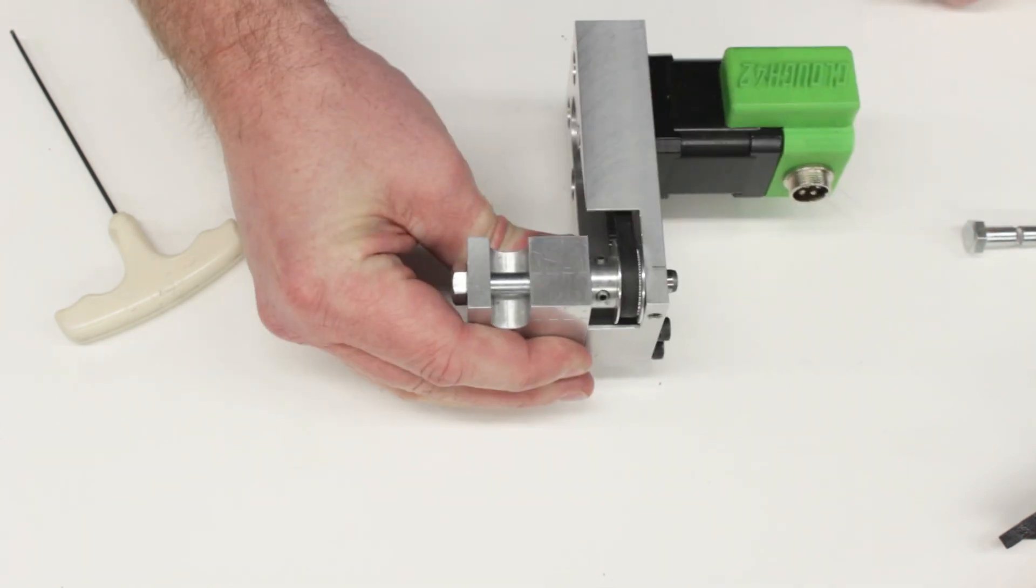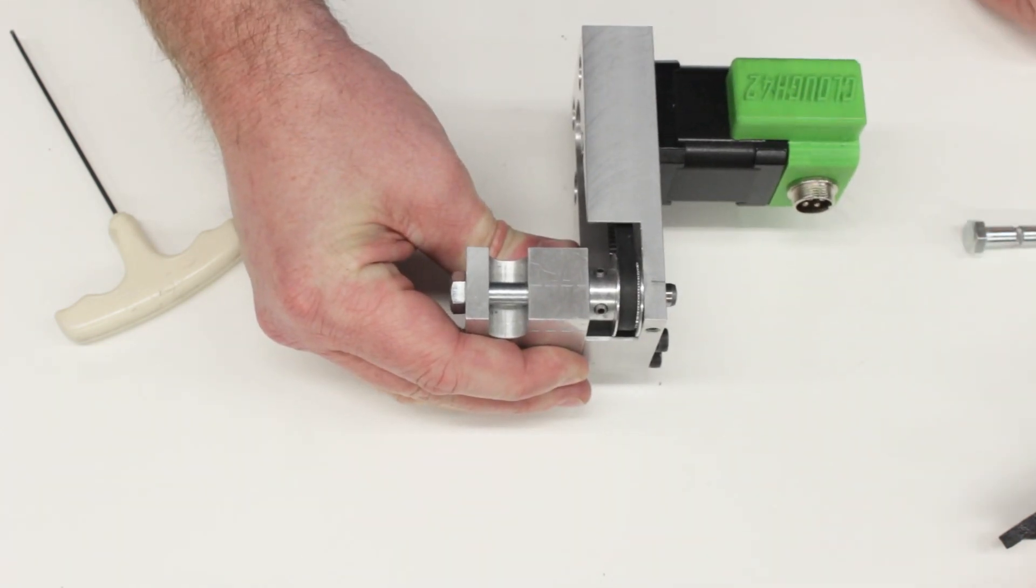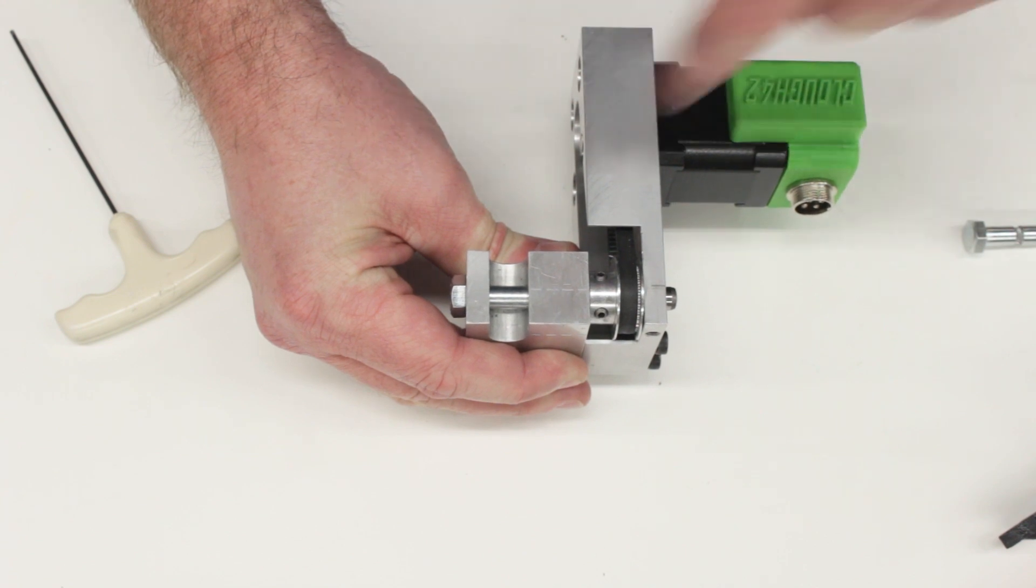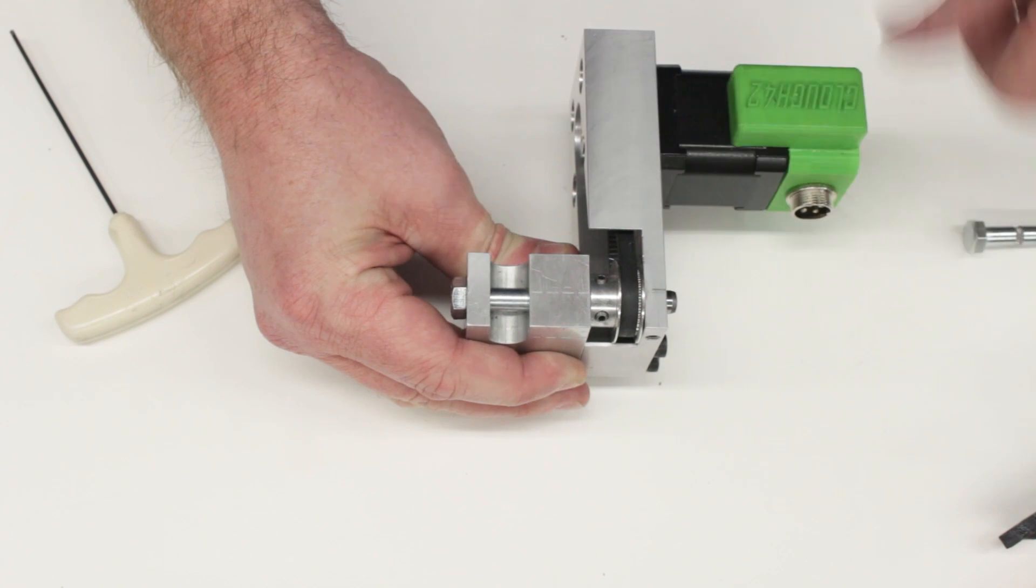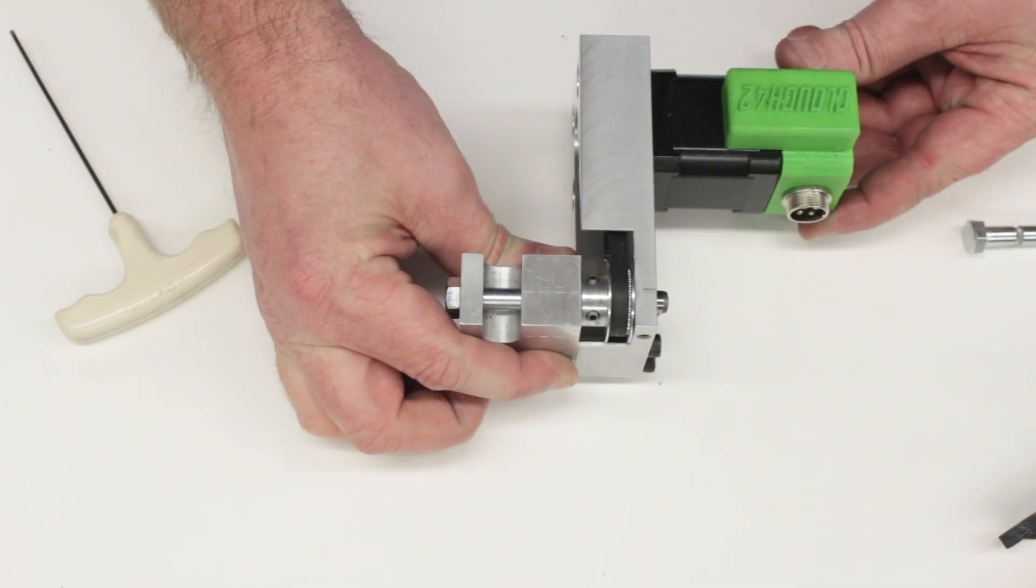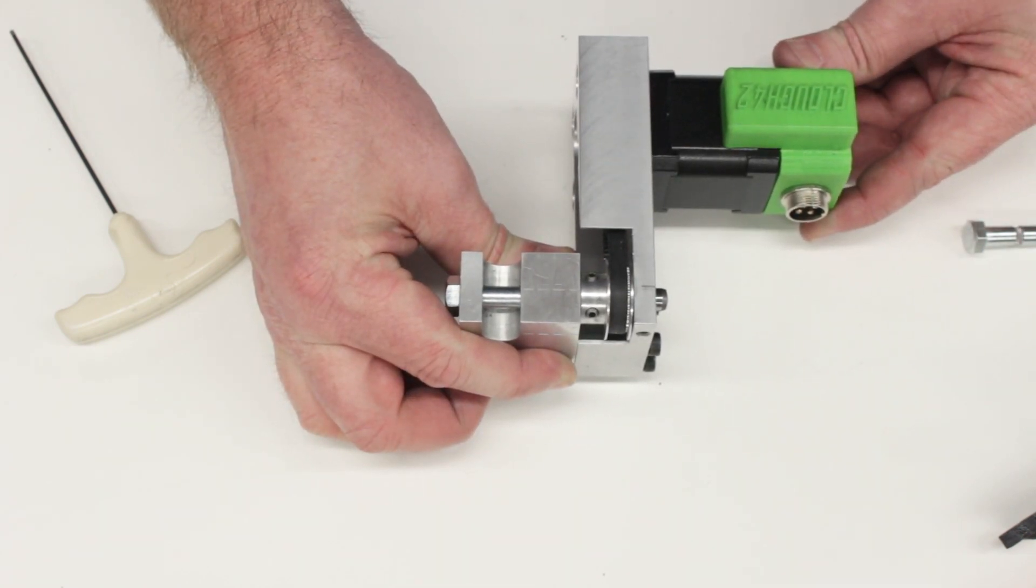And then this whole fixture just fits in the mill. Mill vice just grabs this, drop it in, hook up the motor, and then we can CNC mill the bolt using the three axis CNC for the mill, and then the fourth axis with this motor to index the bolt around. Let's go set it up in the mill and cut some bolts.